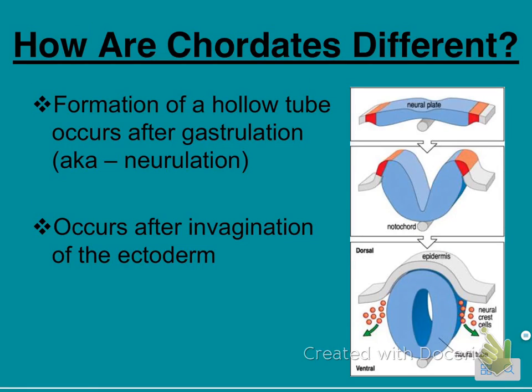How are chordates different? After gastrulation, there's a formation of a hollow tube, which is where the chordate structure comes from. The term for this is neurulation, which occurs after invagination — folding in — of the ectoderm, as shown in the picture.